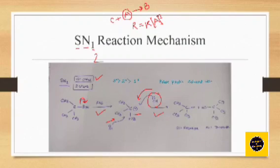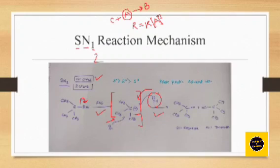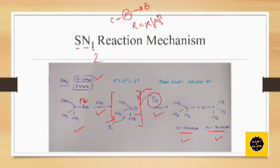Based on the chances of attack — since the carbocation forming is a planar species with SP2 hybridization — the chances of attack can be from either side. So depending on the orientation of attack, the final product may have 50% retention or 50% inversion. Retention means it is retaining the conformation of the reactant; inversion means it is the opposite. To recap SN1: it is a first-order reaction with two steps, the rate-determining step is carbocation formation, and we get a 50% retention / 50% inversion racemic mixture due to the two enantiomers.